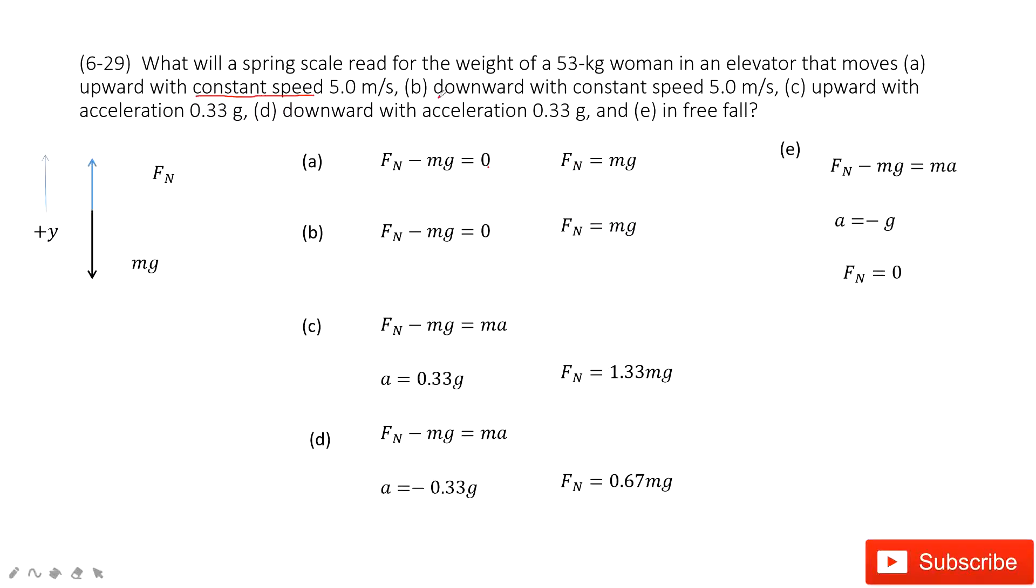The second one, this woman moves downward with constant speed. Constant speed still means acceleration is zero. So the normal force minus the acceleration equals zero. So the normal force is still equal to gravity.